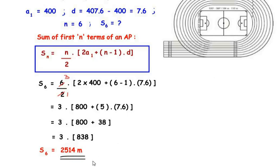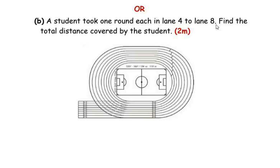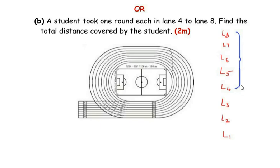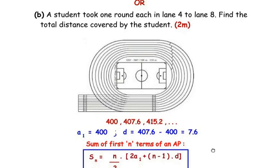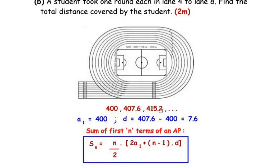Now the OR question: a student took one round each in lanes 4 to 8. Find the total distance covered. To find this, we calculate the total distance for the first 8 lanes (S8) and subtract the total distance for the first 3 lanes (S3). The sequence remains 400, 407.6, 415.2, and so on, with a1 = 400 and d = 7.6.